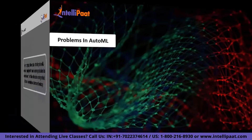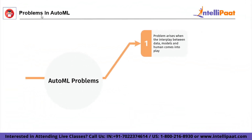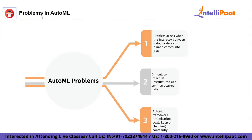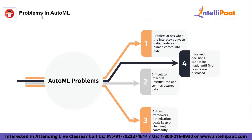Next, we'll talk about the problems in AutoML. AutoML has had a lot of success in applying AI developments. However, there is still opportunity for improvement in the AutoML implementation processes. The problem arises when the interplay between data, models, and humans comes into play. AutoML developers find it difficult to interpret unstructured and semi-structured data. Another issue is that contemporary AutoML framework optimization goals keep changing constantly, and there is no way to make an informed decision until the final results are disclosed.